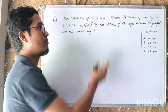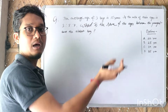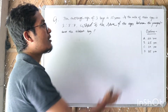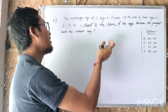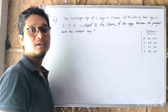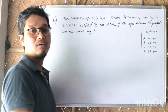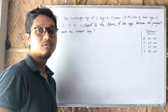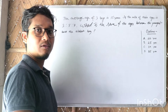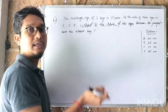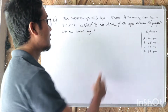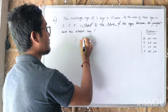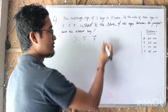The average age of three boys is fifteen years, and the ratio of their ages is 3 to 5 to 7. We will use the x-factor method, writing the ages as 3x, 5x, and 7x.